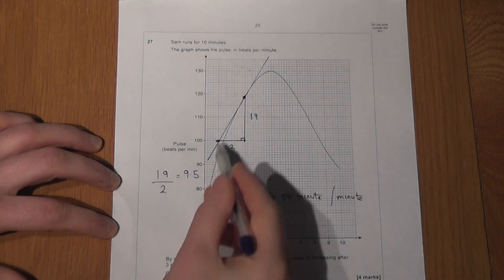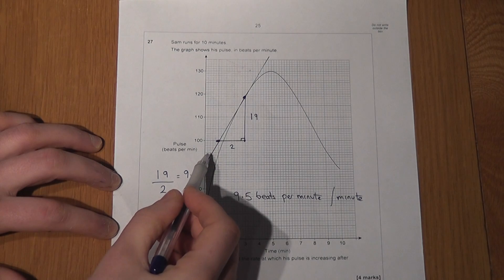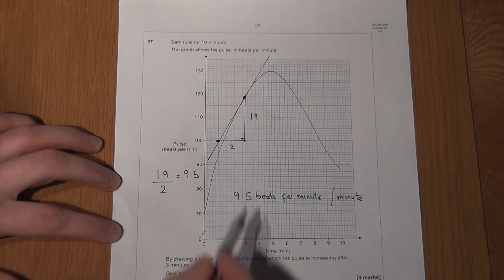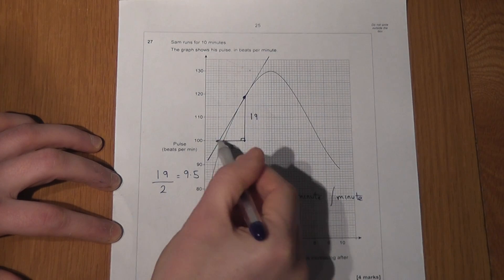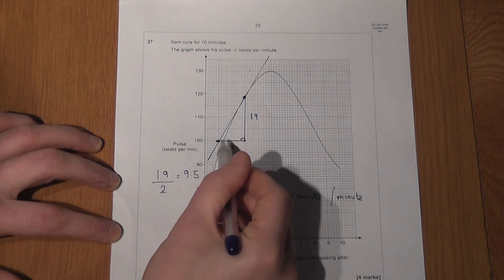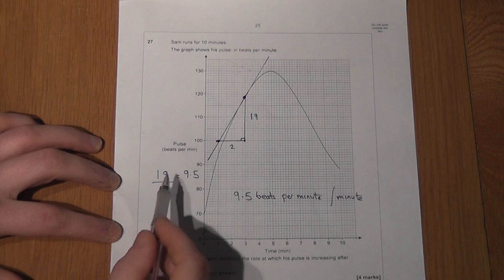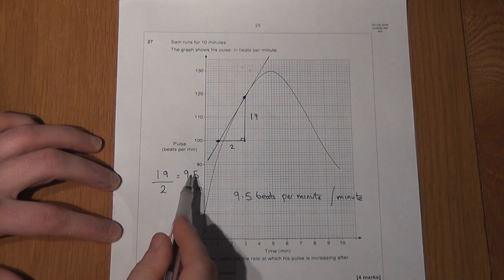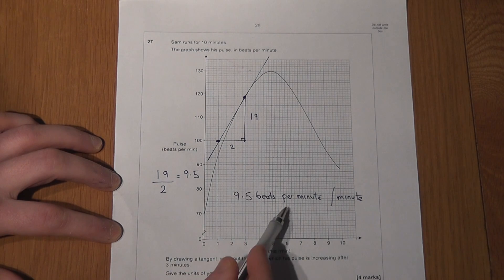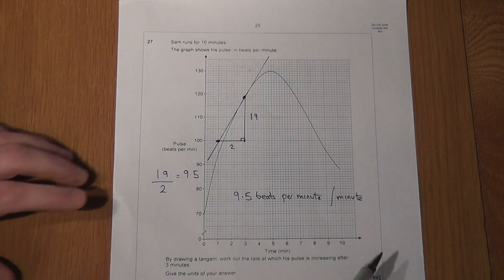So again, given a curve, to find a rate of change, we draw a tangent at that particular point, we draw a right-angled triangle of any size, we measure the rise and the run. We work out the rise over the run to get our answer, and the units are the y-axis units per the x-axis unit.